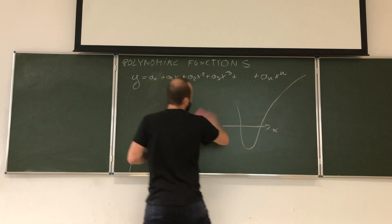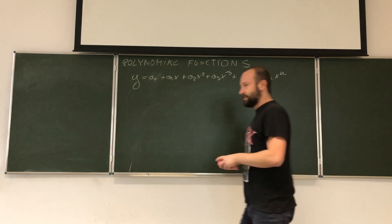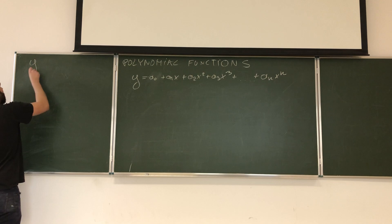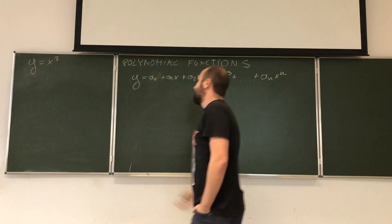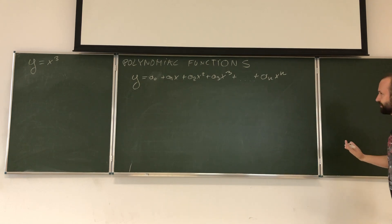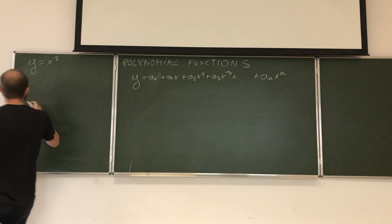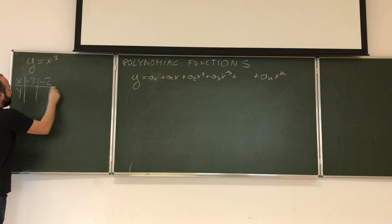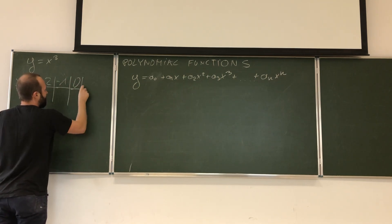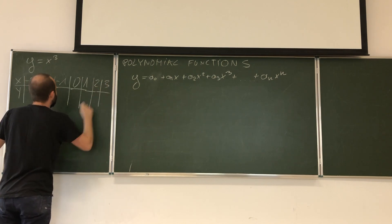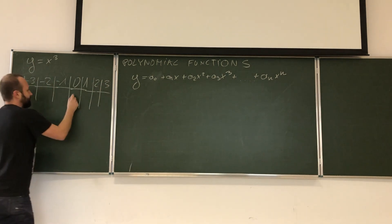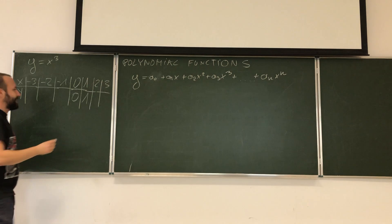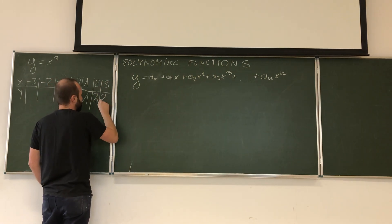Let me demonstrate this using again a very simple example of function y equals x to the power of 3. In a previous video we saw how x to the power of 2 works. Now let's check this one. Also let's start with the table. So we've got negative 3, negative 2, negative 1, 0, 1, 2, 3. 0 to the power of 3 is 0, 1 to the power of 3 is 1, 2 to the power of 3 is 8, and 3 to the power of 3 is 27.